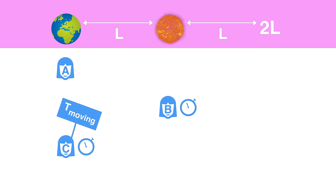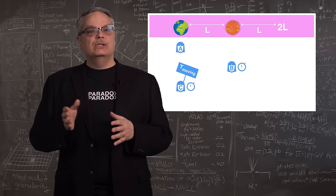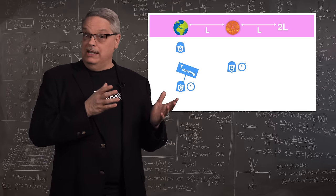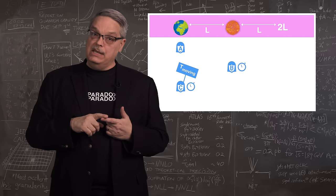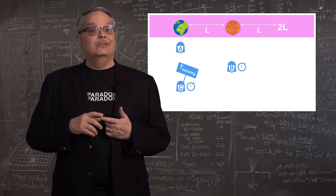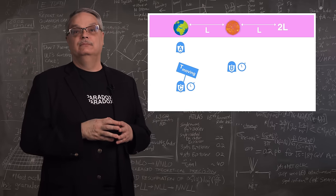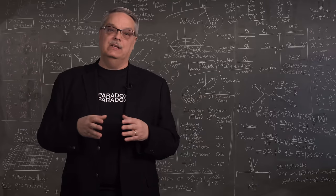Observer C holds up another sign that Observer A can see, which displays the time experienced both by B on the outgoing leg and on C on the return trip. Observer A writes them down.